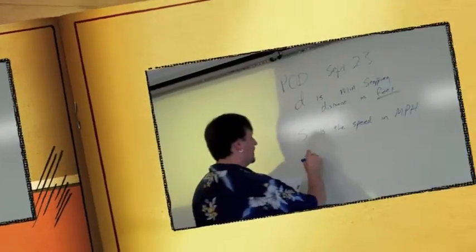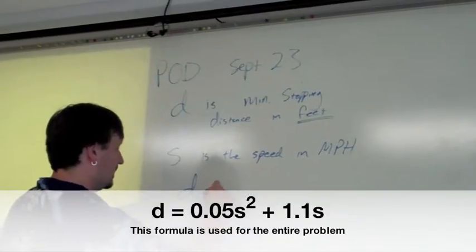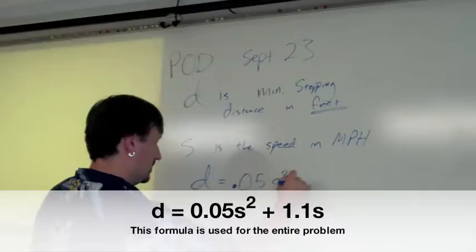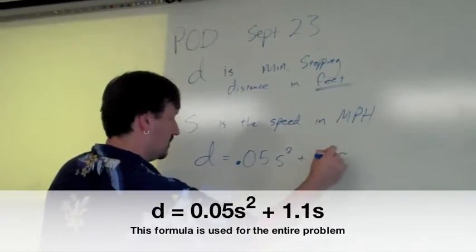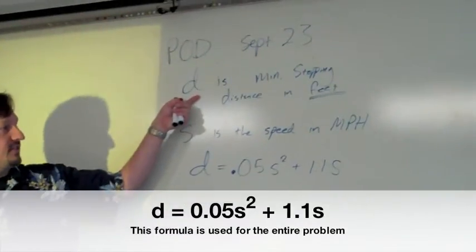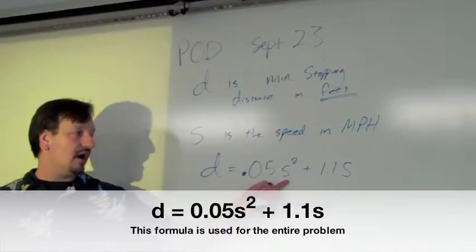And there's a formula that shows how long it will take your car to stop. The minimum stopping distance in feet equals 0.05 times s squared plus 1.1s.